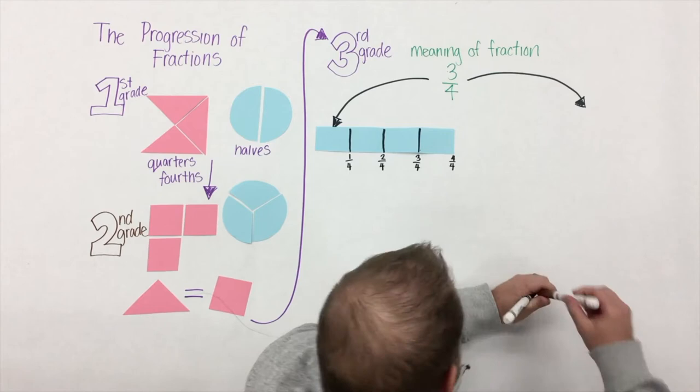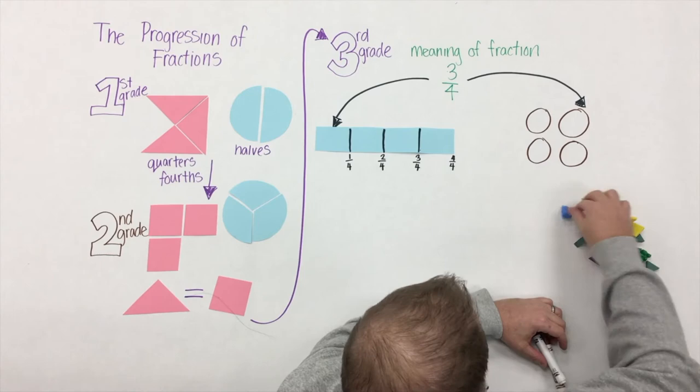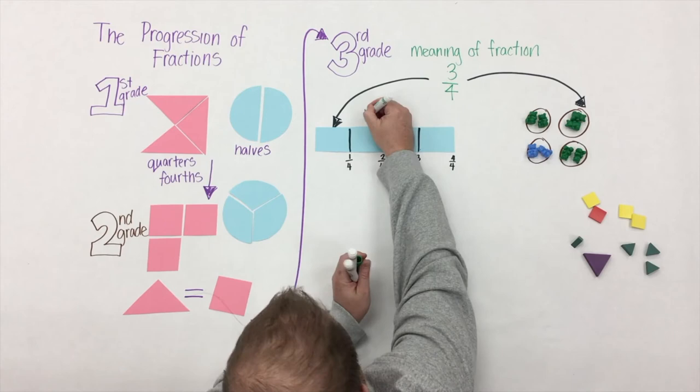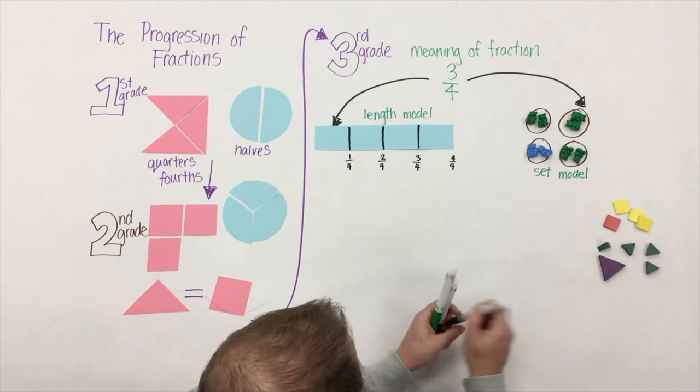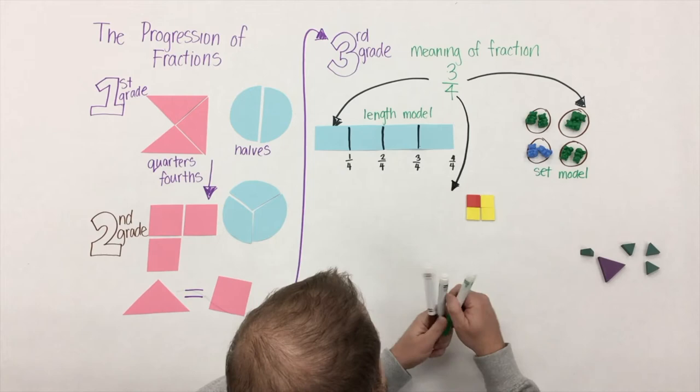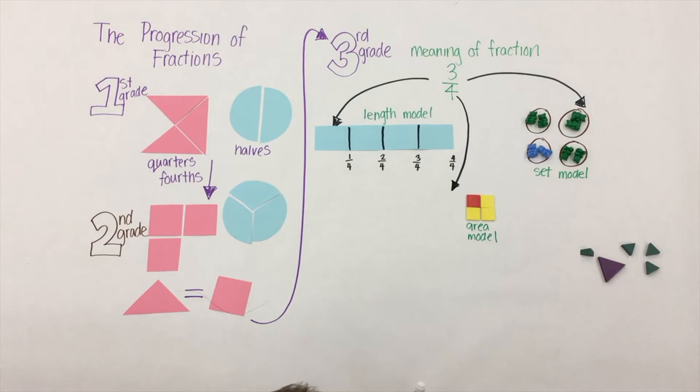How can we do that? One way is by creating a length model - here you see we've taken a strip of paper and folded it up into four parts. Another way, which isn't really explored in third grade, is the use of a set model. Here, three-fourths of the bears are green. The last way that we can represent fractions is the area model - here three-fourths of our square is yellow.